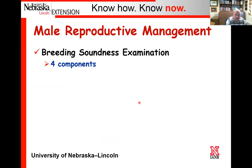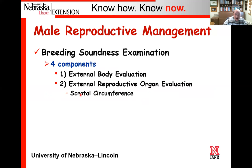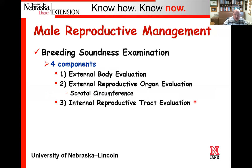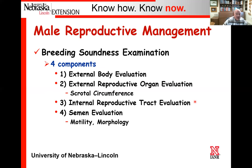On the male side of things, students should know a little about a breeding soundness examination. There are basically four components: an external body evaluation to assess if the animal is healthy; an external reproductive organ evaluation; scrotal circumference measurement; an internal reproductive tract evaluation where the vet palpates internal organs for abnormalities; and finally, semen evaluation for motility and morphology. Motility is how active the sperm are. Morphology is what percentage of spermatozoa are normal versus abnormal—we assume abnormals are probably infertile.